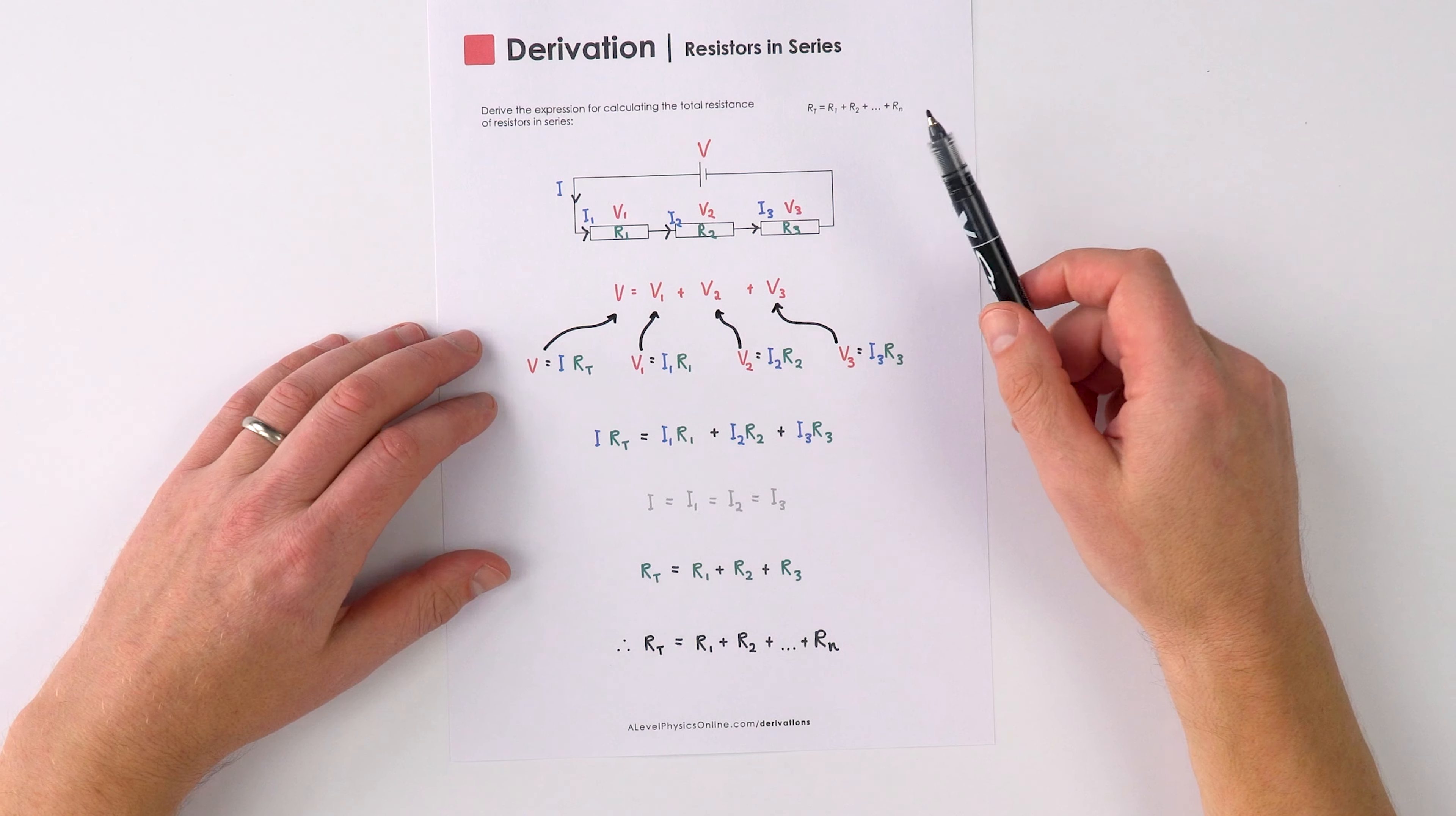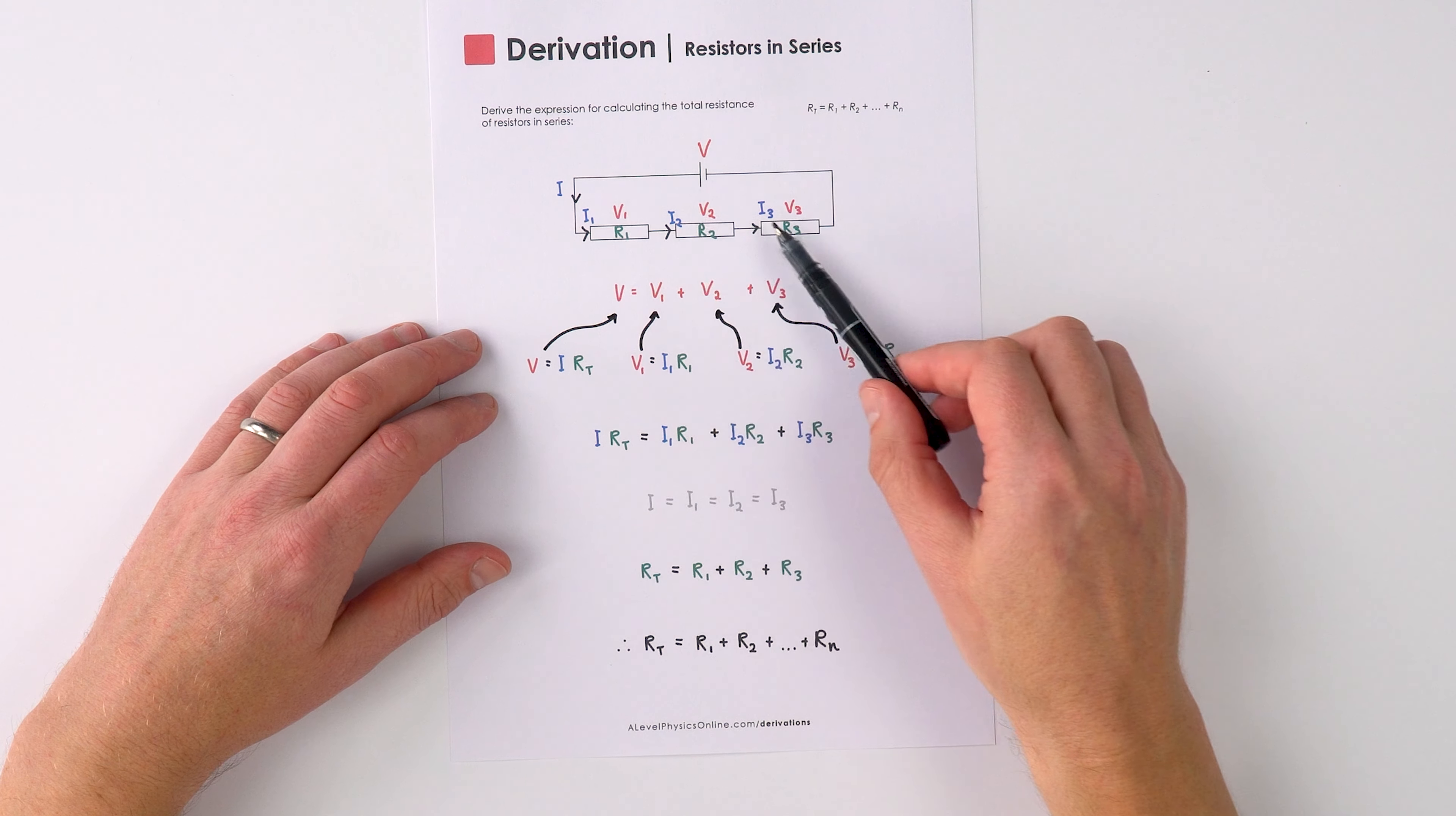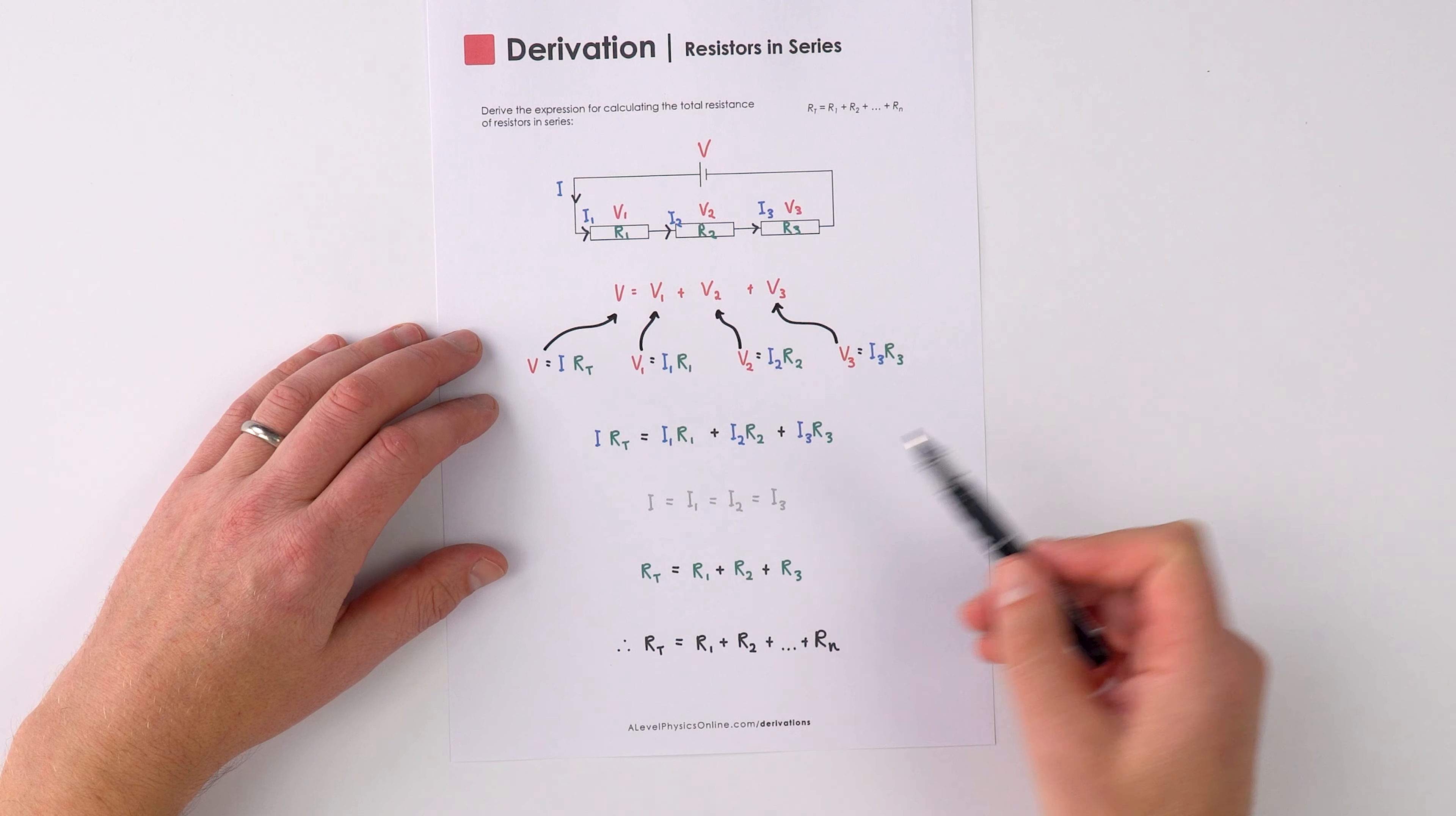Now again, due to Kirchhoff's laws about the current into a junction is equal to the current out of a junction, we know that the current here is going to be the same as the current here, here and here in that circuit.